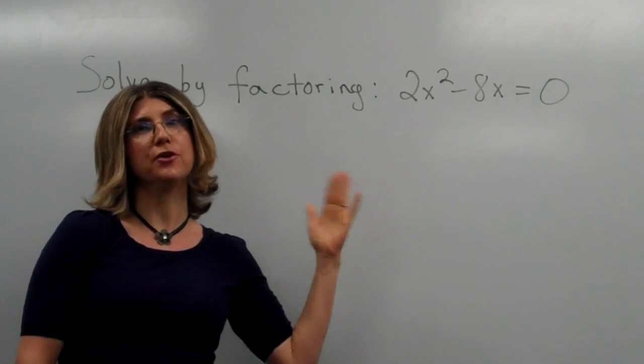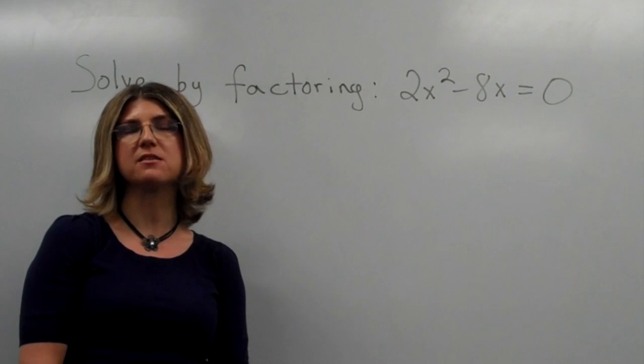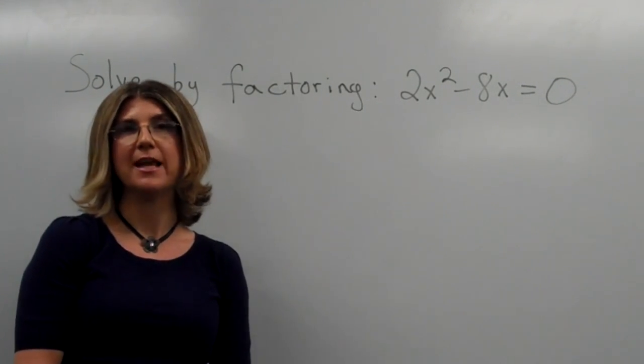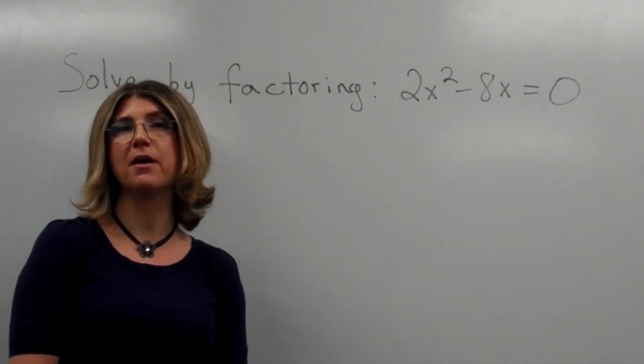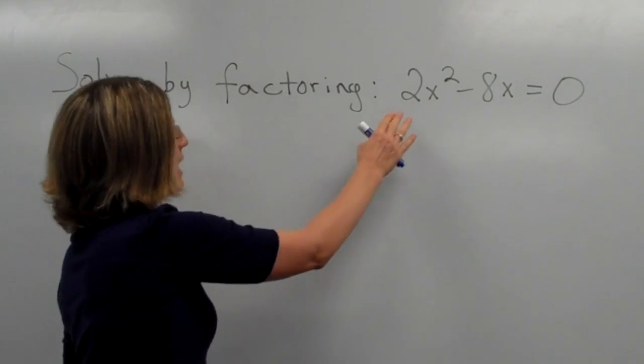What we'd like to do, since we have two terms, is to factor out the greatest common one-term factor. This is sometimes called the greatest common monomial factor, which here,